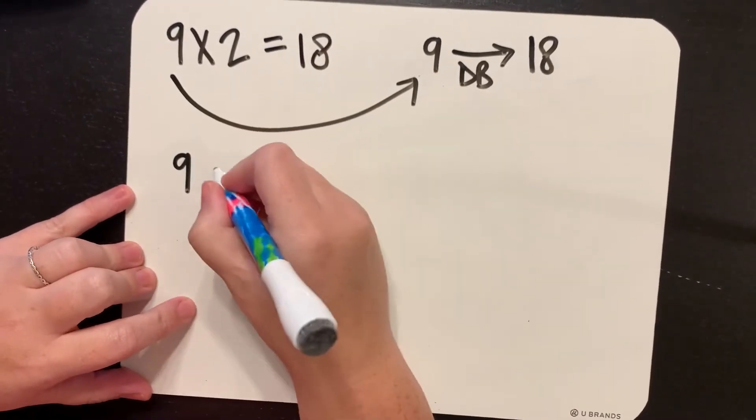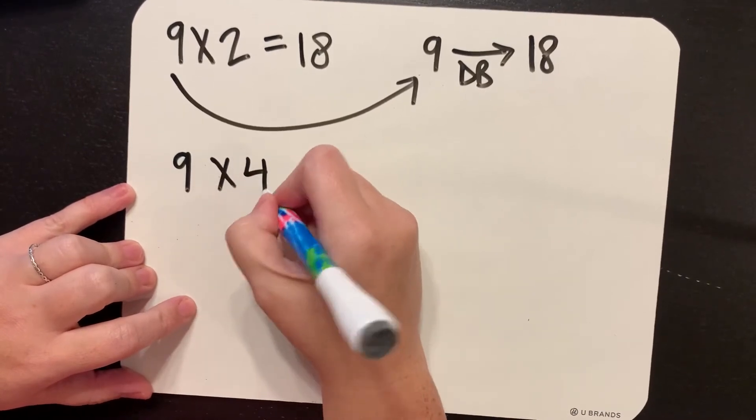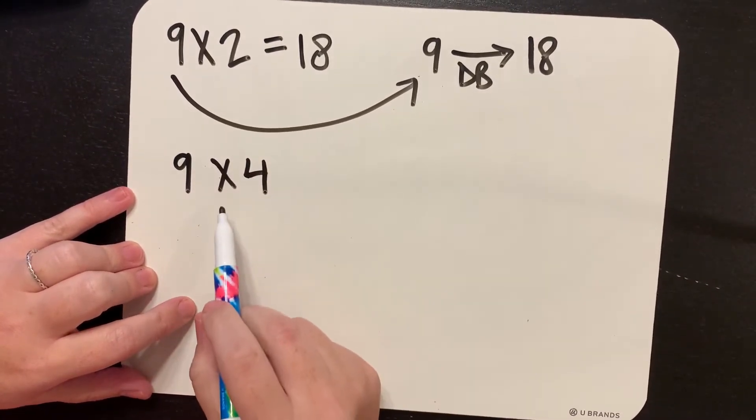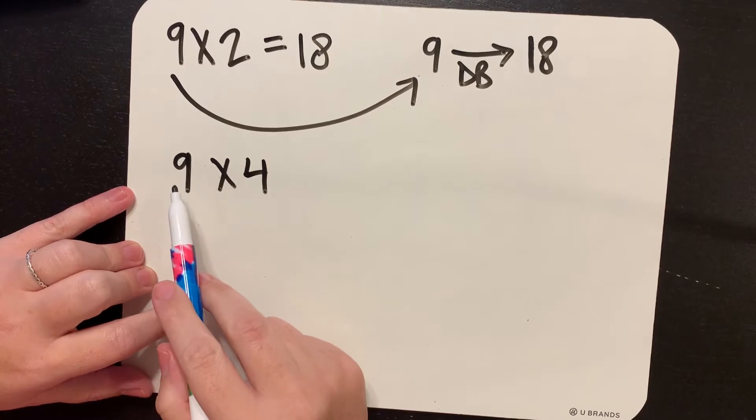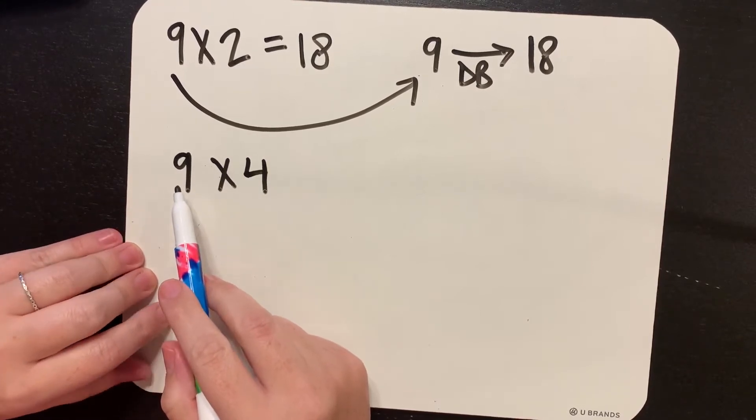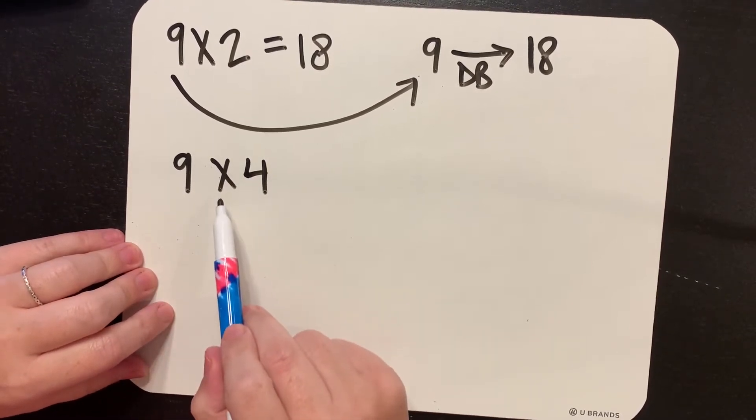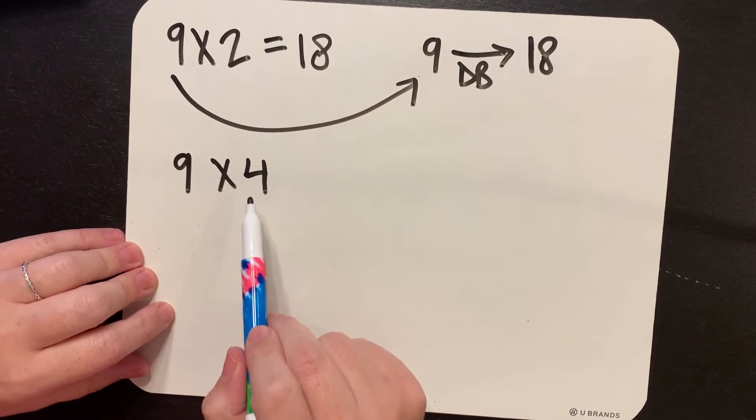Now let's take 9 times 4. Since I'm multiplying by 4, I'm going to take my 9 and I need to double it twice. So you can think of factors that are times 4 as double, double.